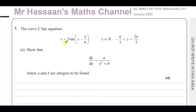Here we're given a curve which has equation x equals 3 tan(y minus π/6). This is an equation where x is in terms of y, where x is a real number and y has value between minus π/3 and 2π/3. We're told to show that dy/dx equals a over x squared plus b — basically to find dy/dx in terms of x.